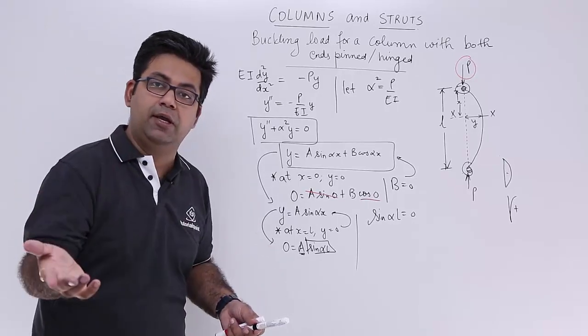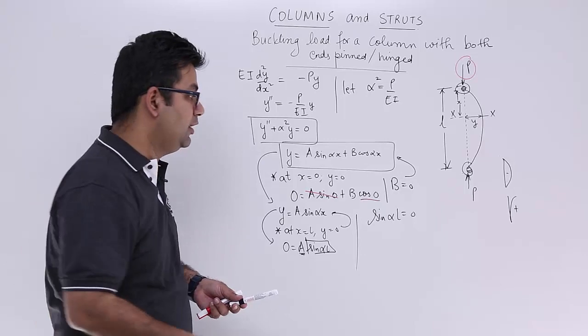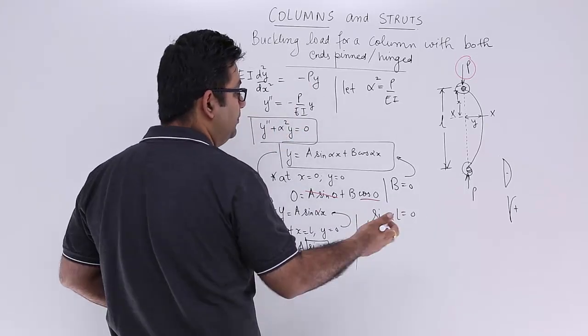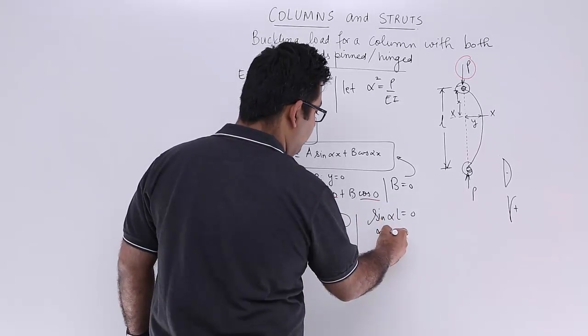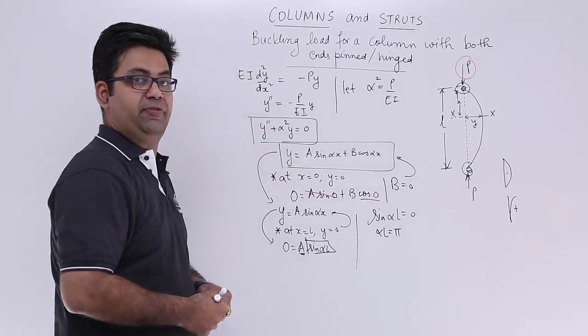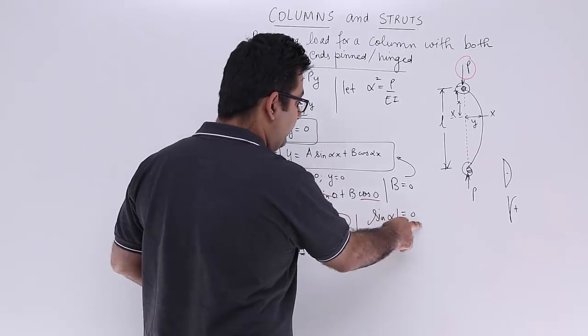So sin alpha l can be equated to 0. Now when is sin theta 0? Sin theta is 0 at 0 degree or pi radians. So I will take the next logical thing, that is pi. So I can say alpha l is equal to pi, so when sin pi is there you get a value 0.